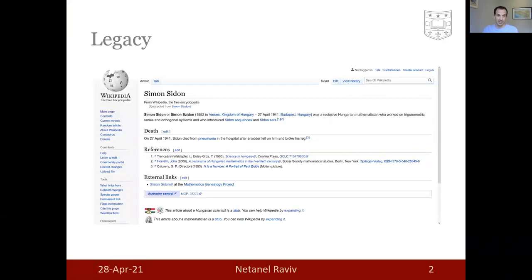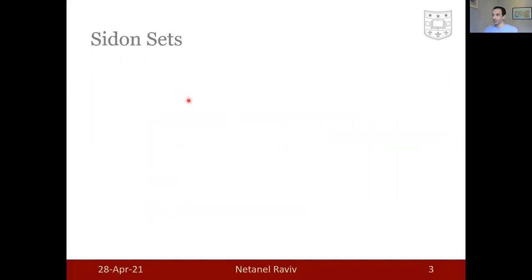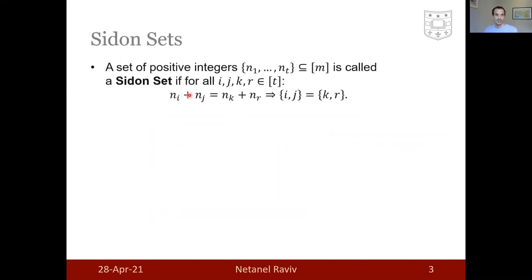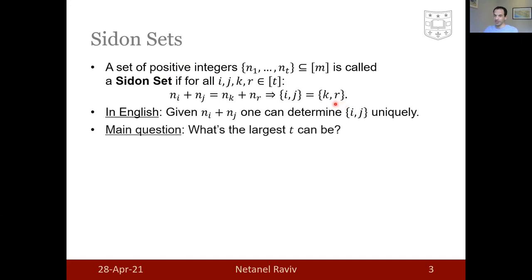A moment of legacy. Simon Sidon was a Hungarian mathematician that died an untimely death in 1941. He was an academic brother with Paul Erdős. And other than this very short Wikipedia entry, his legacy includes Sidon sets. These are sets of positive integers such that for any two pairs in this set, if their sums coincide, then they must be the same pair. In words, if one is given a sum, one can identify the elements which constitute the sum uniquely. The questions in this area of study is how large T can be, the size of the set, of course, with respect to the range M.